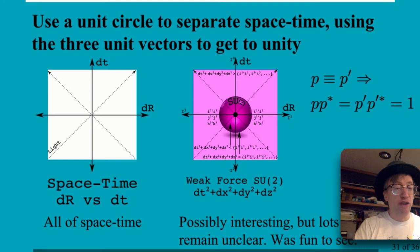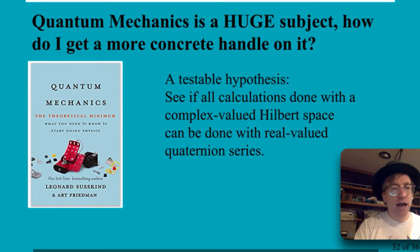All right. But as I say, quantum mechanics—huge subject. So how can you really be way, way, way more connected to what's going on? So I came up with this testable hypothesis. There's this wonderful book, Quantum Mechanics: The Theoretical Minimum, by Susskind and Freeman. And I'm just going to go through this entire book and say, can I do absolutely everything they do using quaternions?